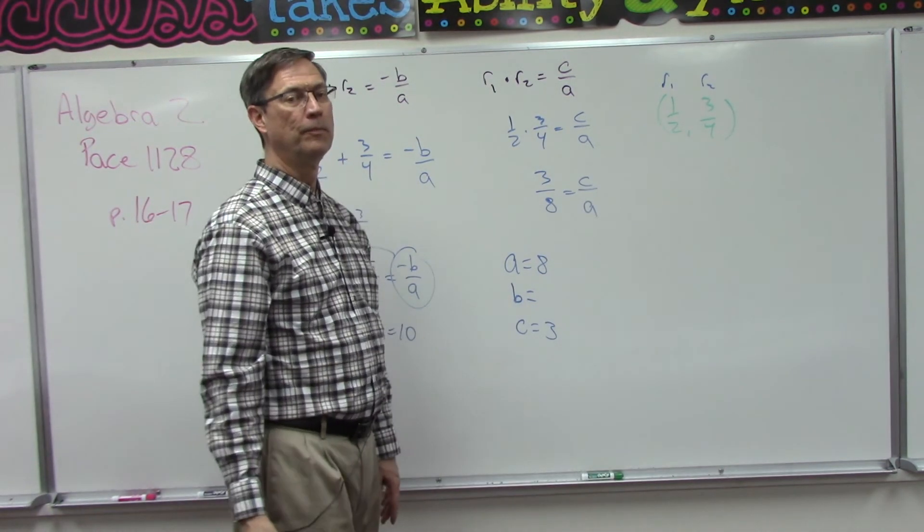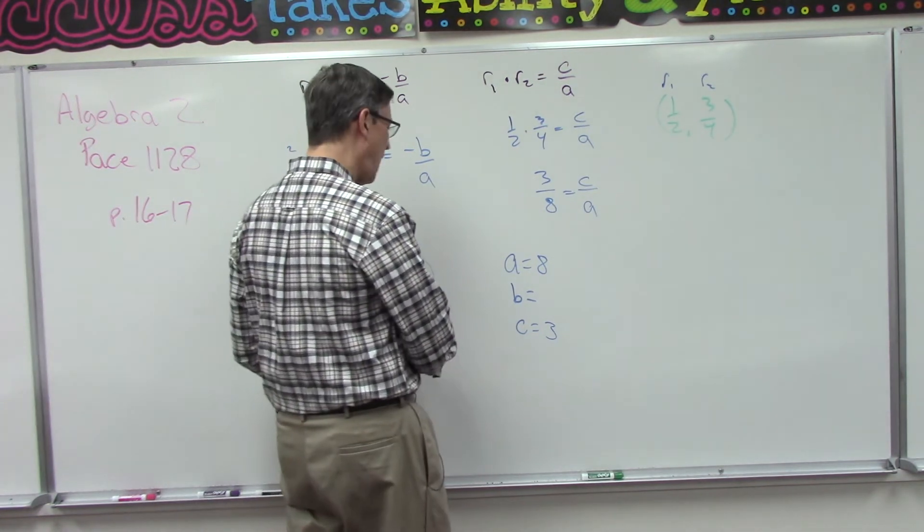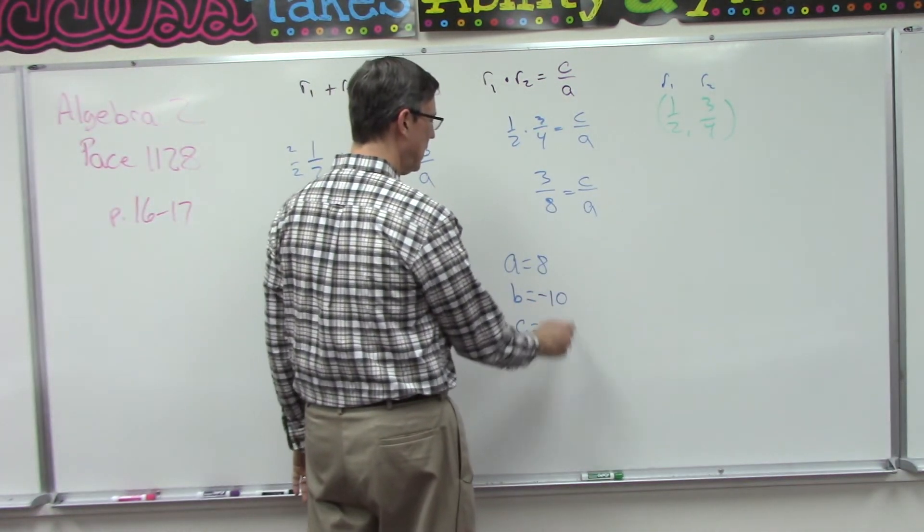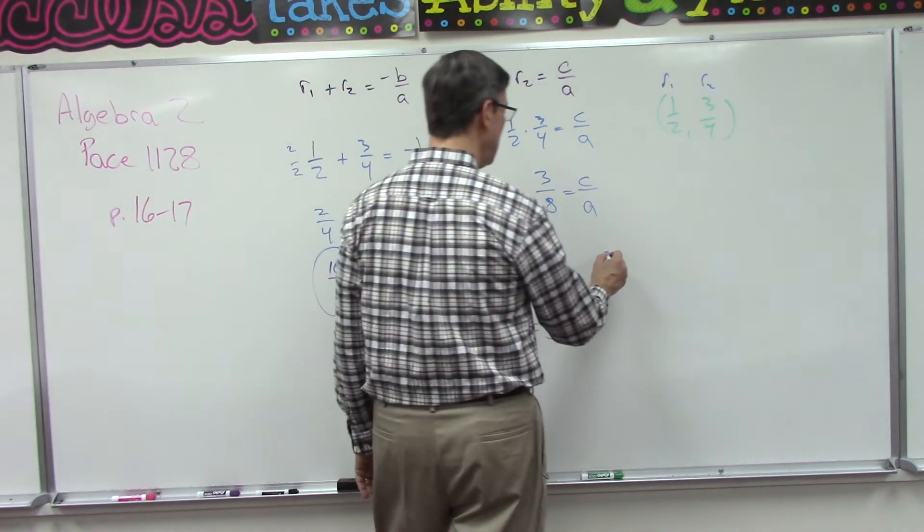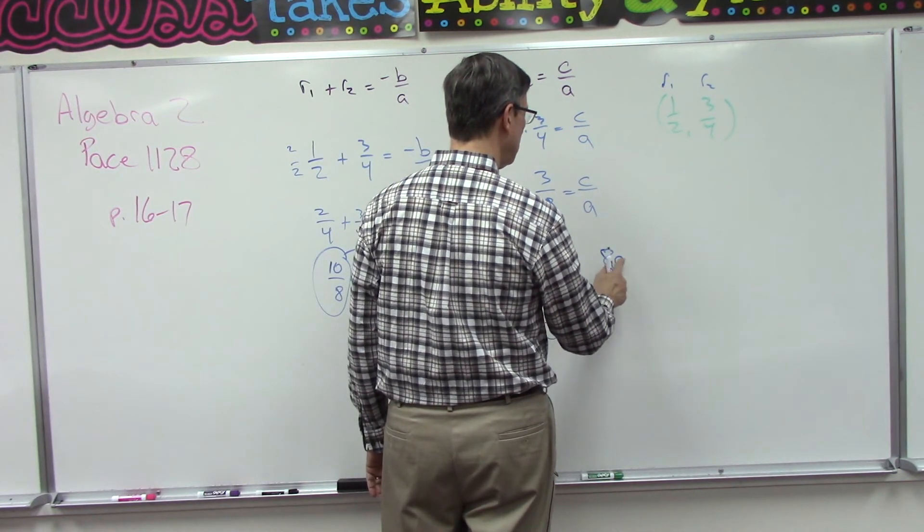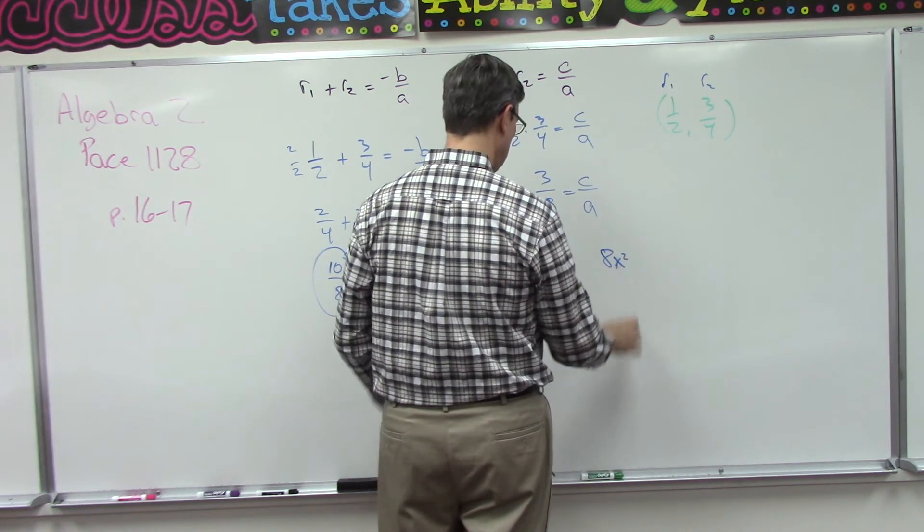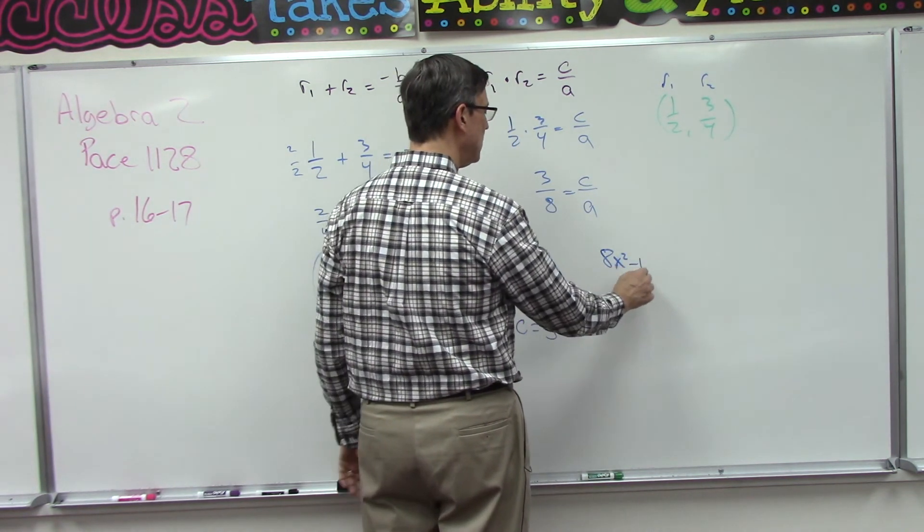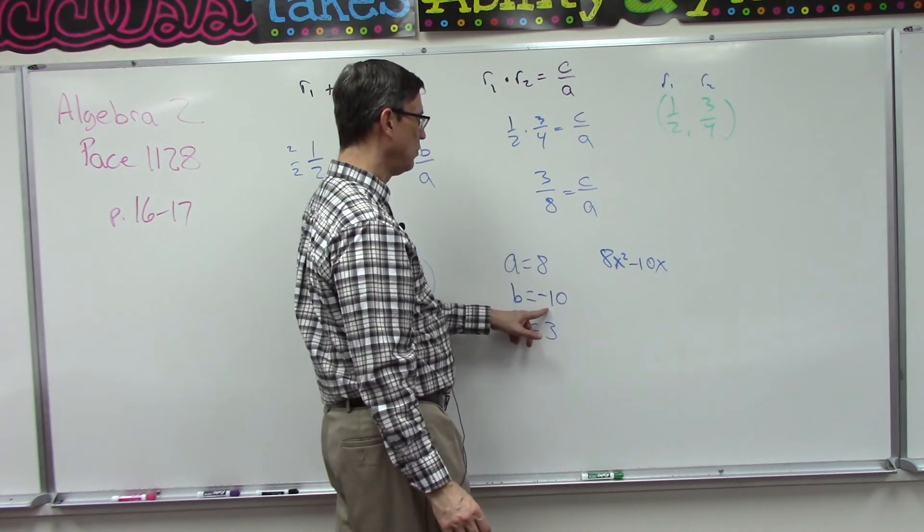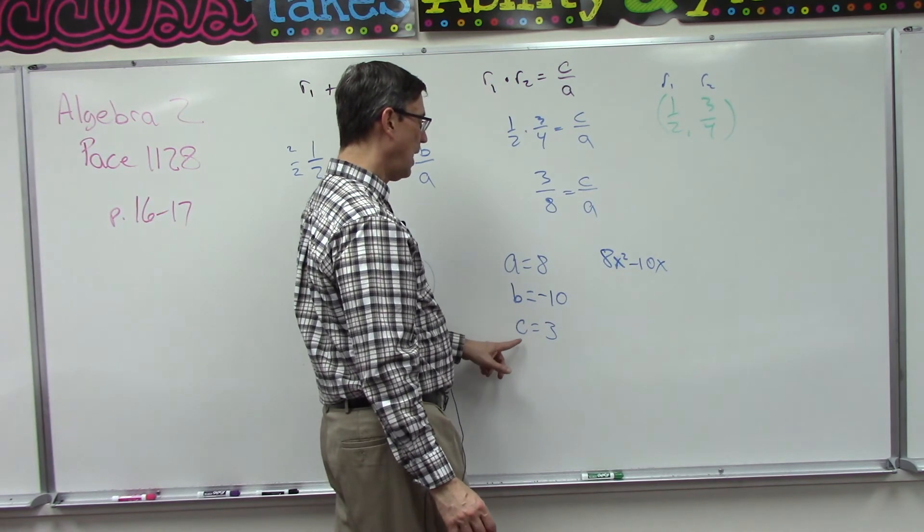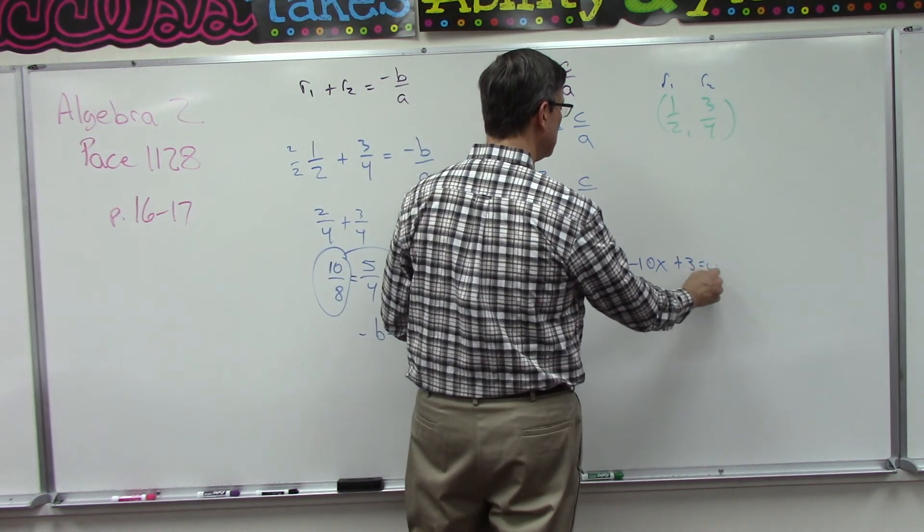Now the equation then is: we put the eight in front of the x squared. Now we're going to do minus 10x because the b value is negative 10, so we put that in front of the x. And then the c value is plus three, and then we set that equal to zero.